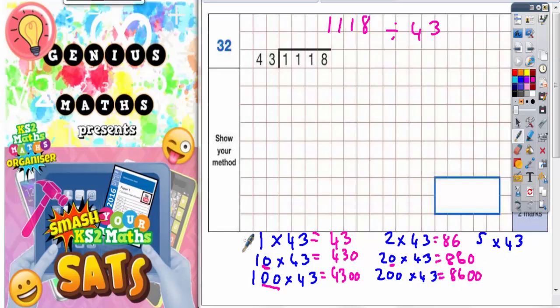5 43's is going to be half of whatever this 10 43's is here. So half of 430. Half of 400 is 200 and half of 30 is 15, so that's going to be 215.